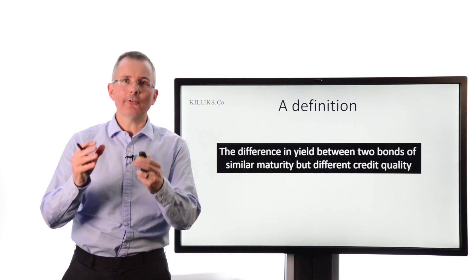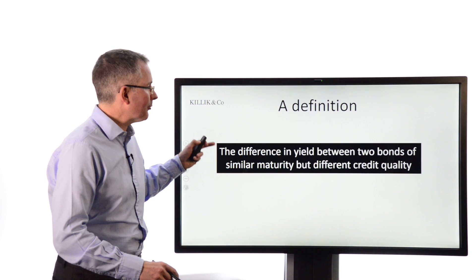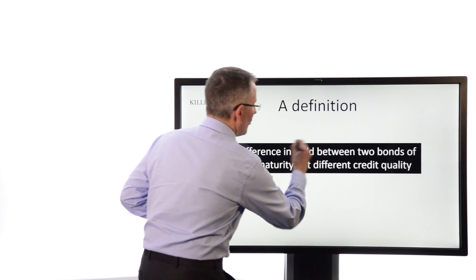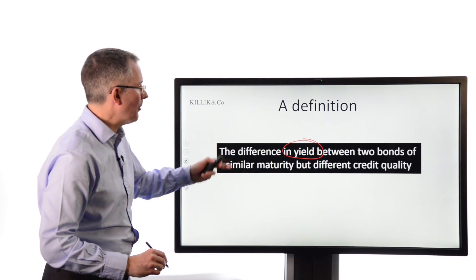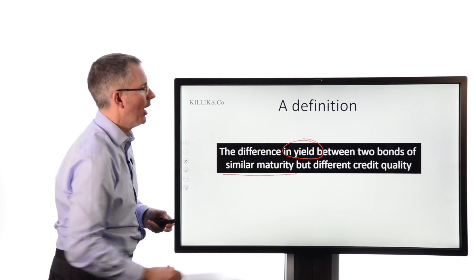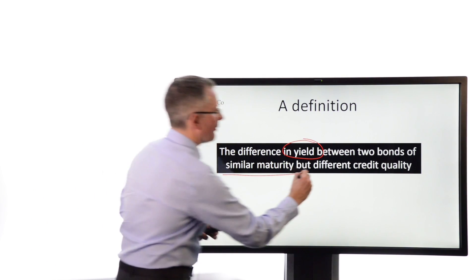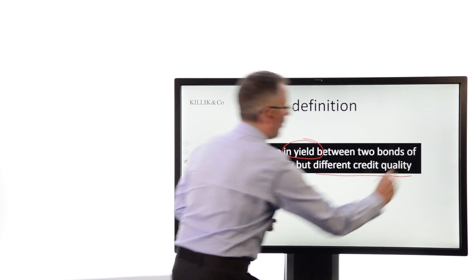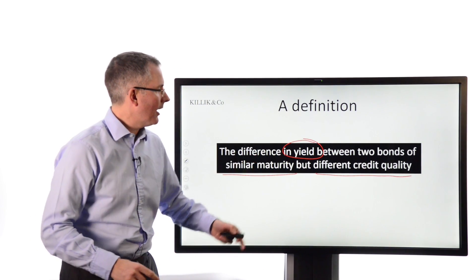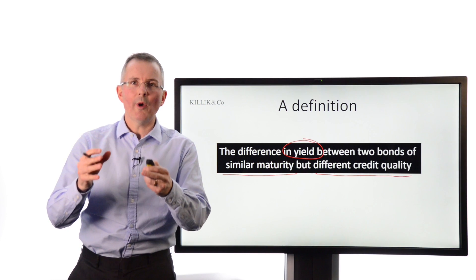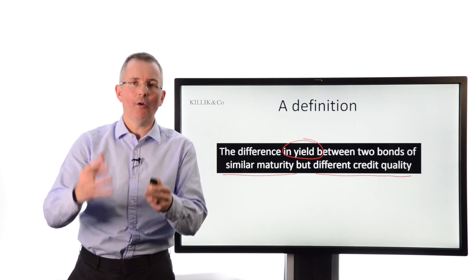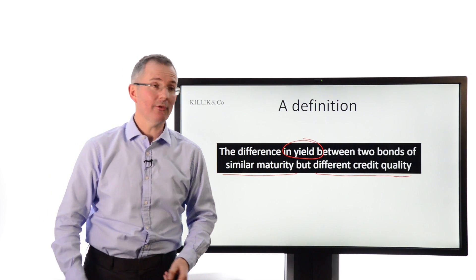In essence, a yield spread or a credit spread is the difference in yield between two bonds of similar maturity but different credit quality. You've got to compare apples with apples. That's the basic principle — keep that in mind. Let's look at what yield we're comparing and what message we're trying to get out of this comparison.